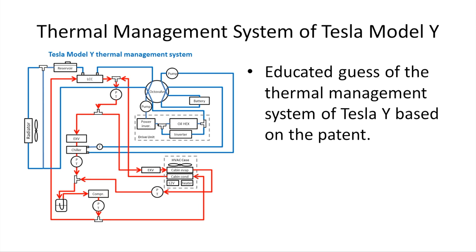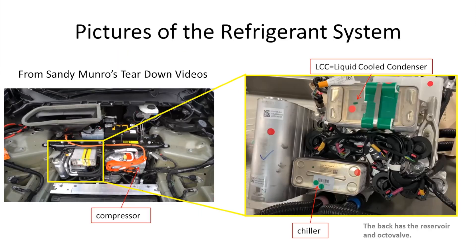This is a key slide of this presentation — the potential schematics of the thermal management system of the Tesla Model Y. The red lines represent refrigerant flow while the blue lines represent coolant flows. I will first show you some pictures of the components from the Tesla Model Y and then explain how the system works, thanks to Sandy Munro's teardown videos.